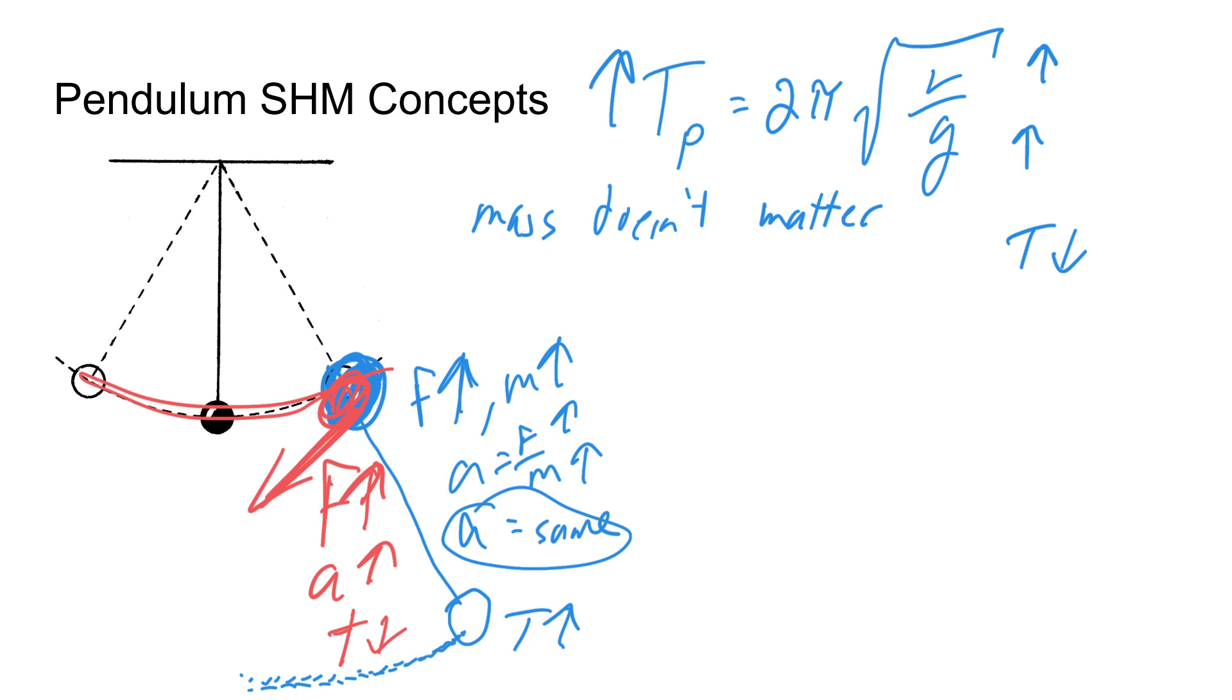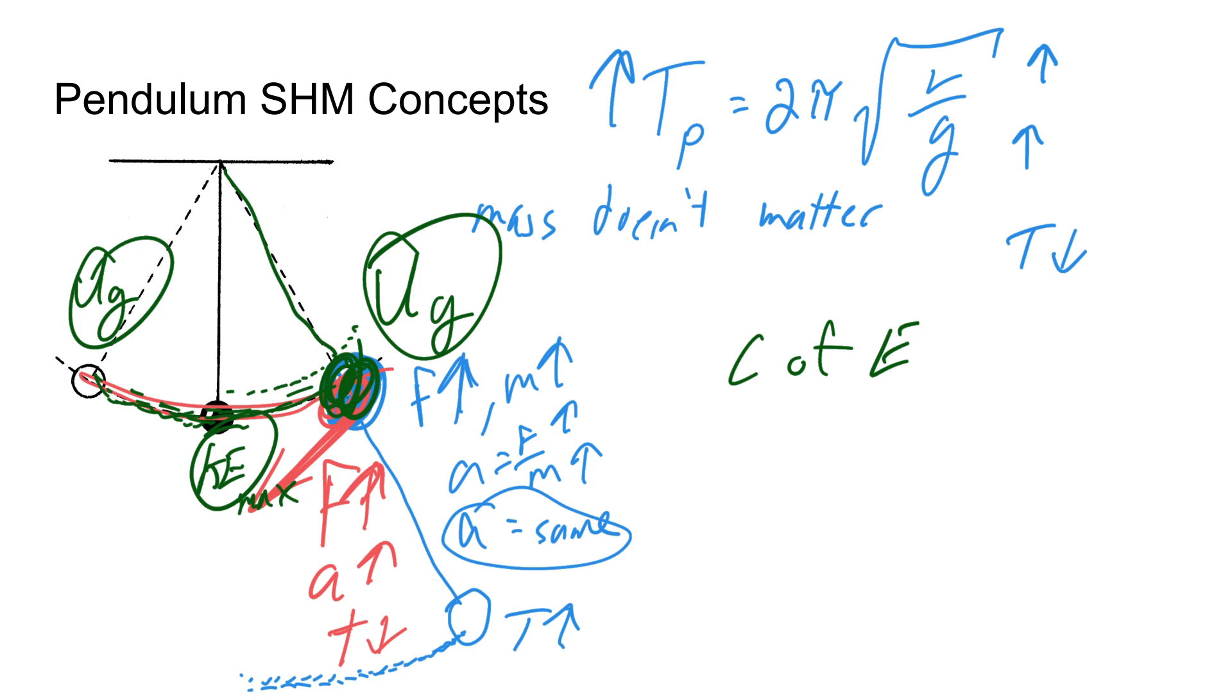One last concept I wanted to look at was energy. We've been talking a lot about forces, but energy, conservation of energy, applies here as well. So for example when we pull this back we have all gravitational potential. As it starts to fall, that gravitational potential gets turned into kinetic energy. So at this point kinetic energy would be kind of maximized. And then it's going to keep moving and then all that kinetic energy is going to be turned into potential, and so forth and so on. So it's just going to continue to move back and forth, back and forth, continually changing from potential to kinetic to potential and so on.